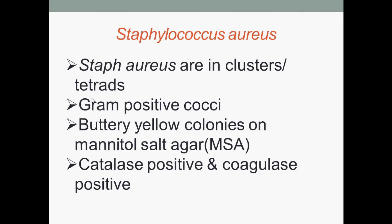A bit about mannitol salt agar. Mannitol salt agar is a differential and selective media that is used for the isolation of Staphylococci. It usually contains about 7.5% sodium chloride, hence selects for those bacteria that can tolerate high salt concentrations, also known as halophiles or salt-loving bacteria. Mannitol salt agar also distinguishes bacteria based on their ability to ferment the sugar mannitol.